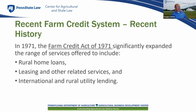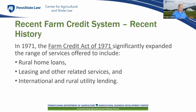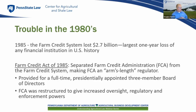In 1971, Congress passed the current act under which we are operating today — the Farm Credit Act of 1971. What it did was greatly expand the lending authority of the farm credit system by adding the authority to make rural home loans, to finance farm-related and agricultural-related services, finance leasing, finance international agricultural trade, and also authorize the financing of rural utilities.